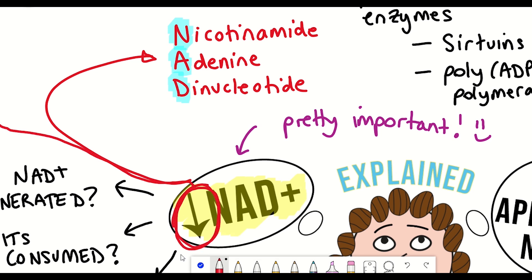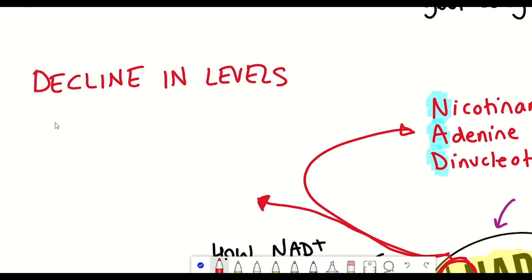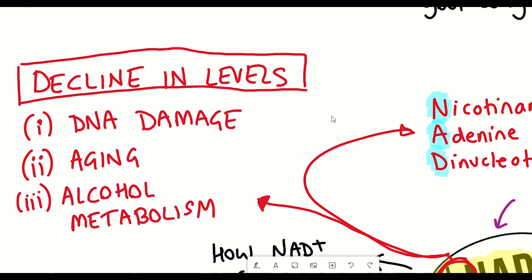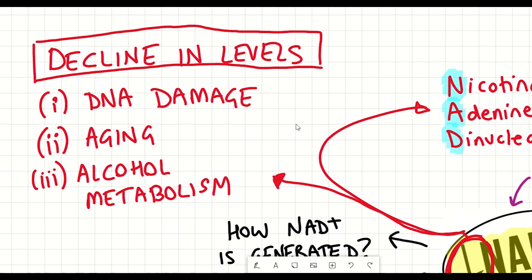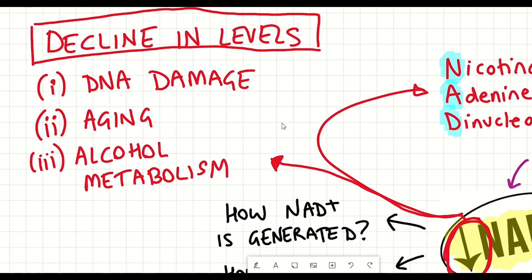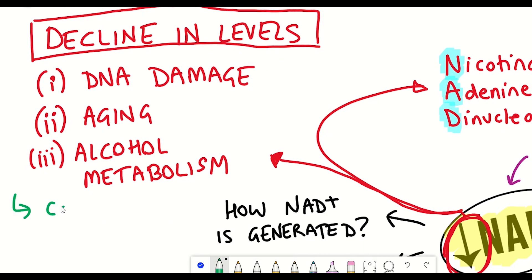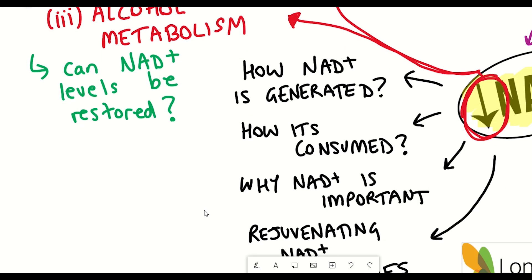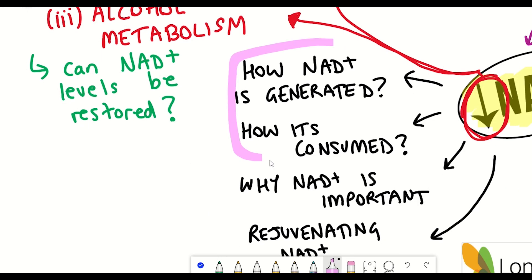NAD+ levels have been shown to decline as we age, particularly when there's high amounts of DNA damage — partly due to the activation of PARP enzymes and sirtuin activity, and also during alcohol metabolism. For these reasons, there's a lot of interest in trying to restore NAD+ levels to alleviate some of the symptoms associated with its decline. But before we go into these methods, we really need to understand NAD metabolism and how it works.